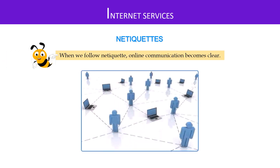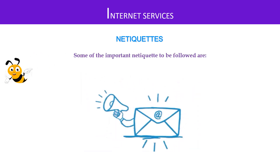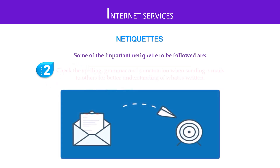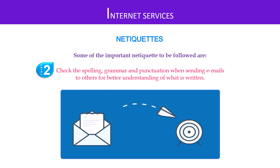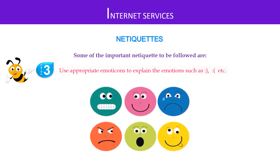When we follow netiquette, online communication becomes clearer. Some important netiquette rules to follow are: first, be polite when you communicate online; second, check the spelling, grammar, and punctuation when sending emails to others for better understanding; and third, use appropriate emoticons to explain emotions, such as the ones that you see on screen.